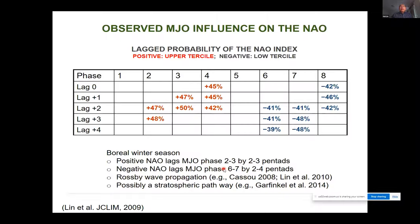The mechanism explaining this lag teleconnection includes possible Rossby wave propagation and, from recent studies, a stratosphere pathway through which the MJO can influence the lower hemisphere.